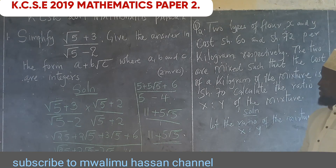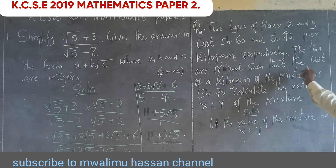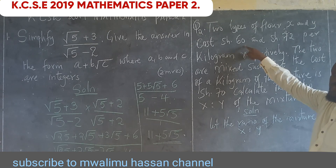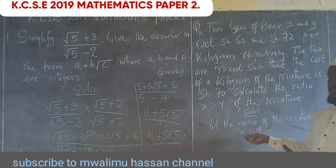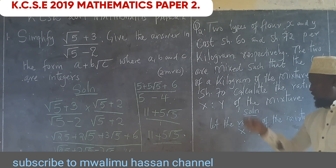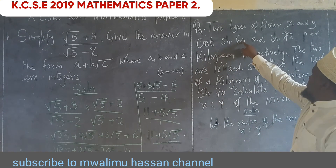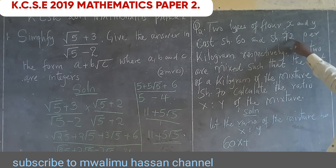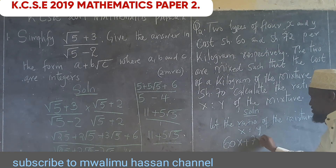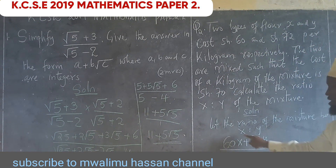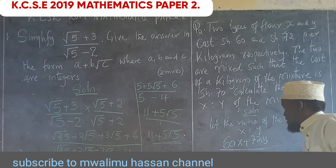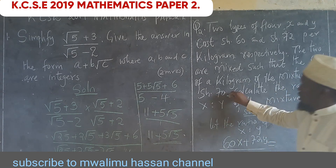To find the cost of a kilogram of the mixture, we first outline the cost of each type of flour and divide by the sum of the ratio. So we set up: (60X + 72Y) divided by (X + Y) equals 70, where 70 is the cost per kilogram of the mixture.